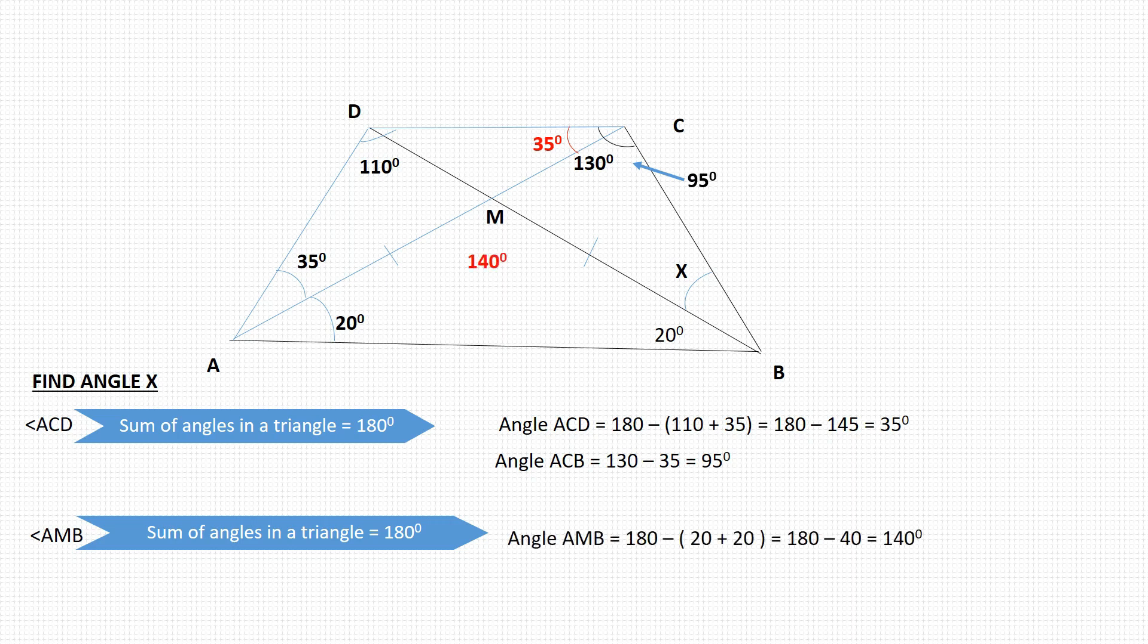After that, the question then remains, what is the size of angle BMC? Now to get BMC, remember that we have found angle BMA. Angles on a straight line will always add up to 180. If BMA is 140 degrees, then we can get the angle on the other side of the line, and that is going to be 180 take away 140 degrees, which gives us 40 degrees.